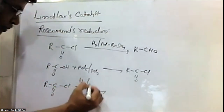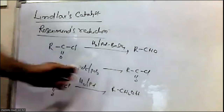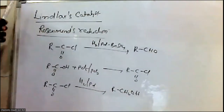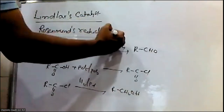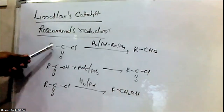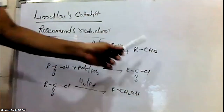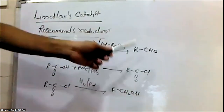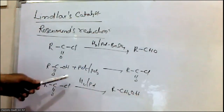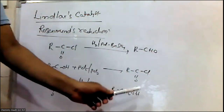If acid halides react with H2 by palladium, you get alcohols — complete reduction occurs. But if we use Lindlar's Catalyst, the reaction stops at the aldehyde stage. Rosenmund's Reduction is used only for the preparation of aldehydes. When acid halides react with H2 by palladium by barium sulfate, aldehydes are formed and the reduction stops at the aldehyde stage.